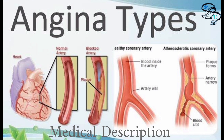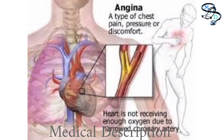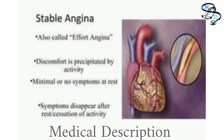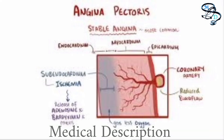Angina pectoris occurs when medical conditions such as atherosclerosis cause the walls of the blood vessels to become narrow, decreasing blood flow. During rest, the narrowed arteries allow enough blood to reach the heart. However, during emotional stress or strenuous physical activity, the heart requires more blood, causing it to work harder and leading to angina pectoris.